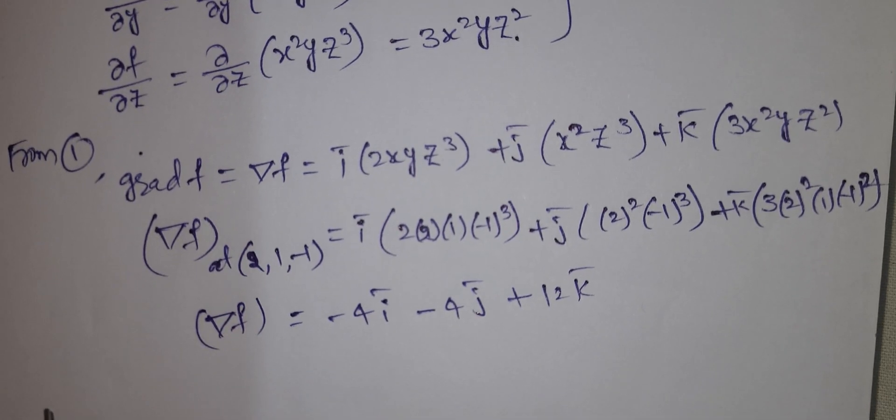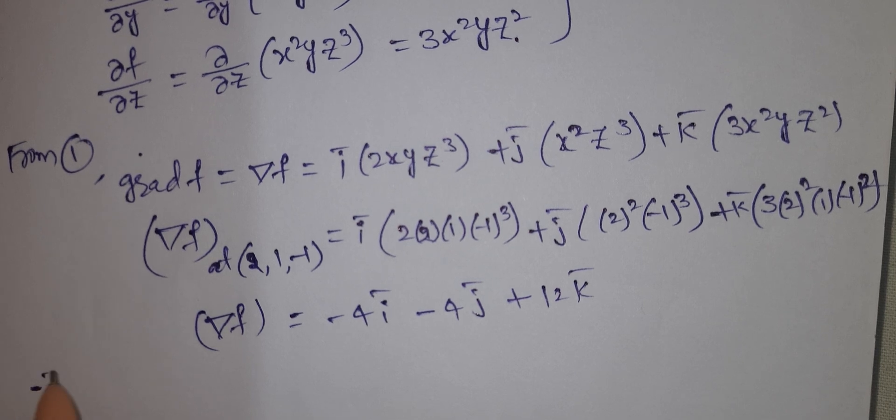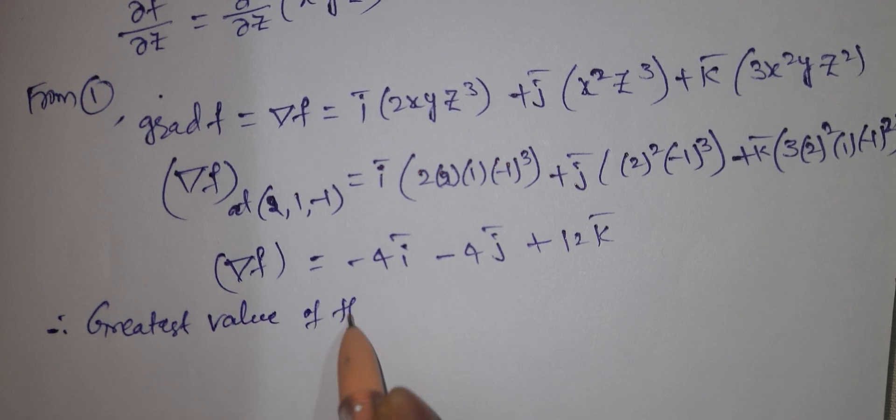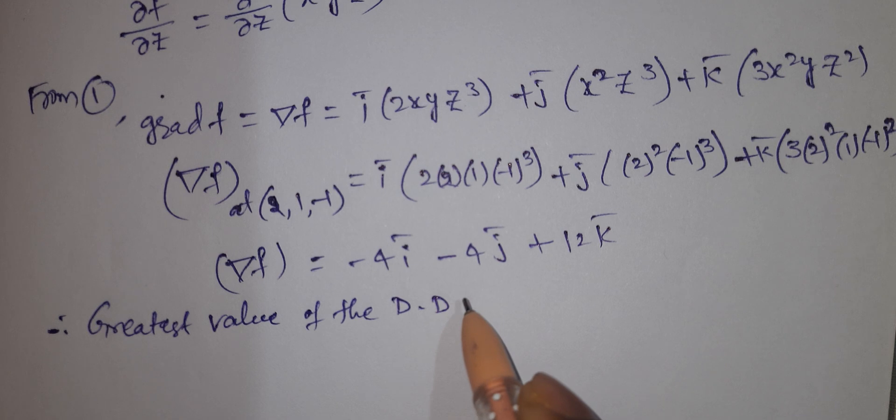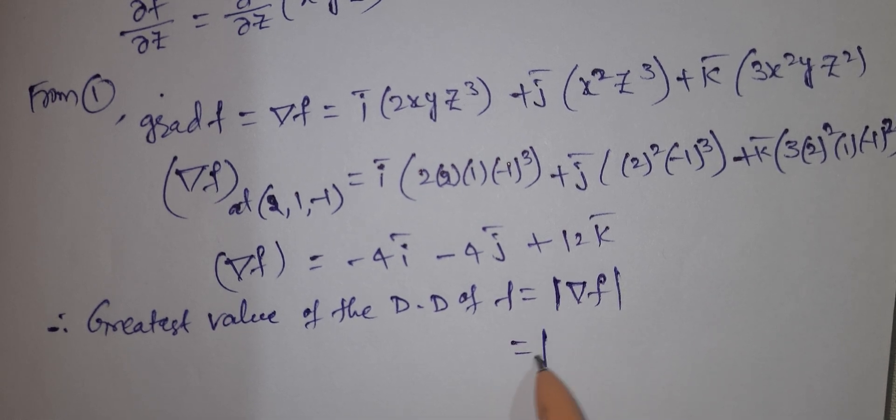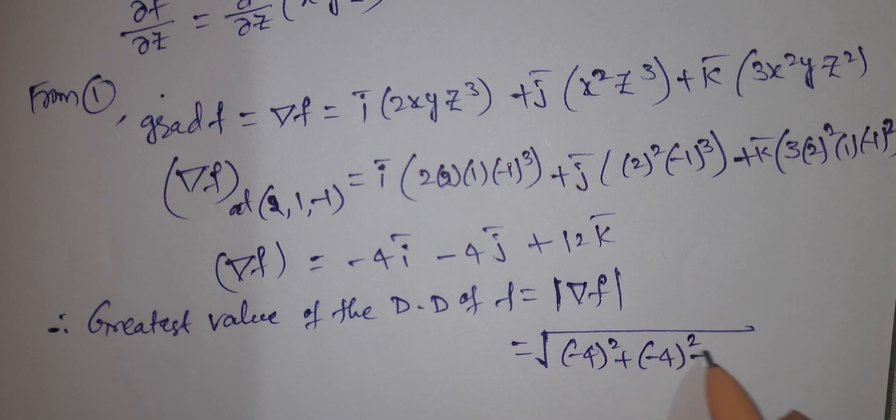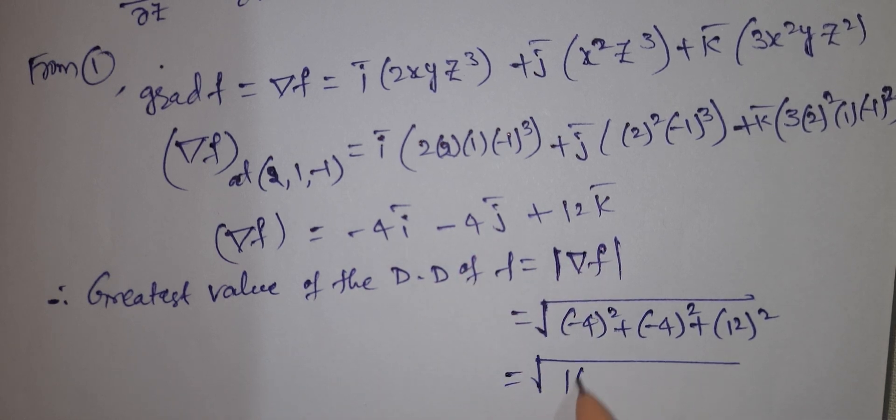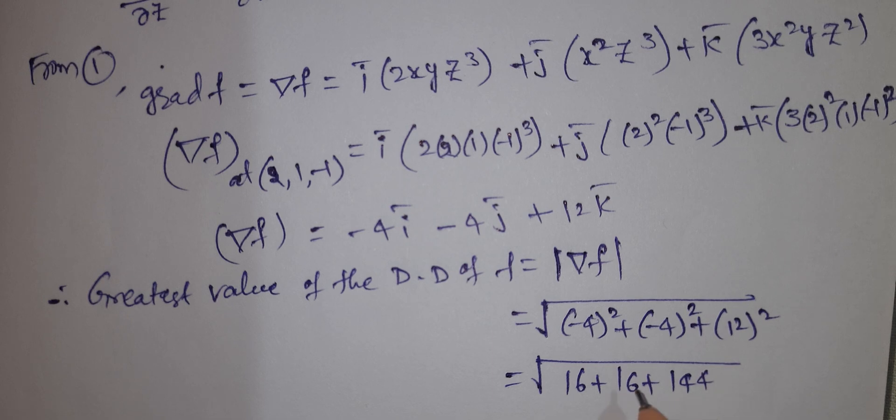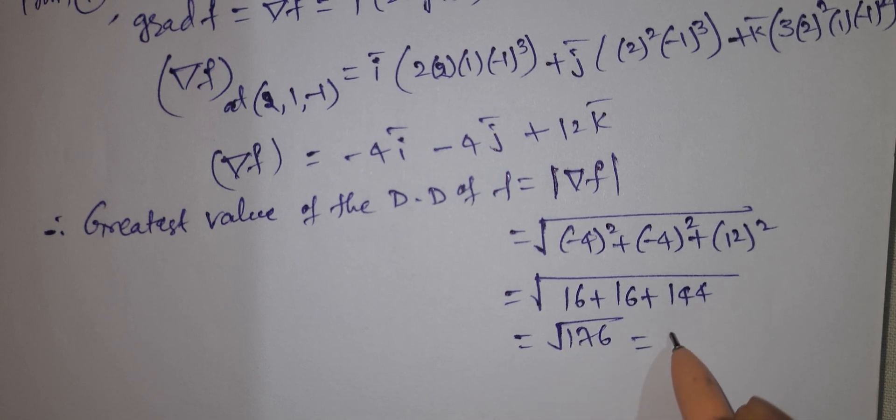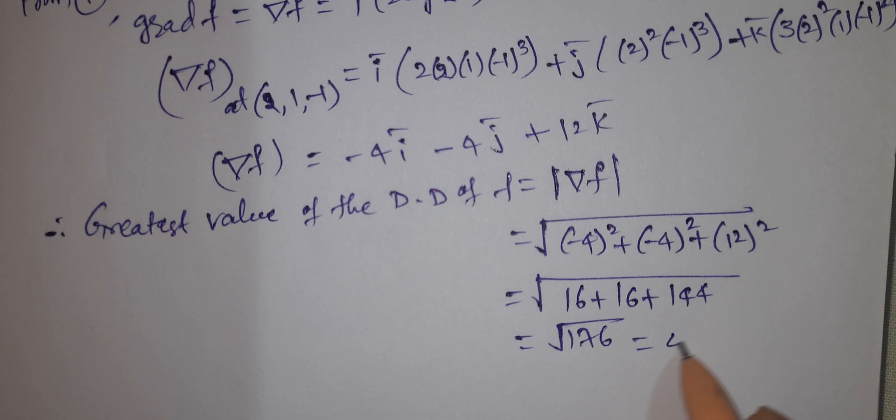The greatest value of the directional derivative of f equals the modulus of del f. The mod is square root of [(-4) squared plus (-4) squared plus (12) squared] equals square root of [16 plus 16 plus 144] equals square root of 176 equals square root of (16 times 11) equals 4 root 11.